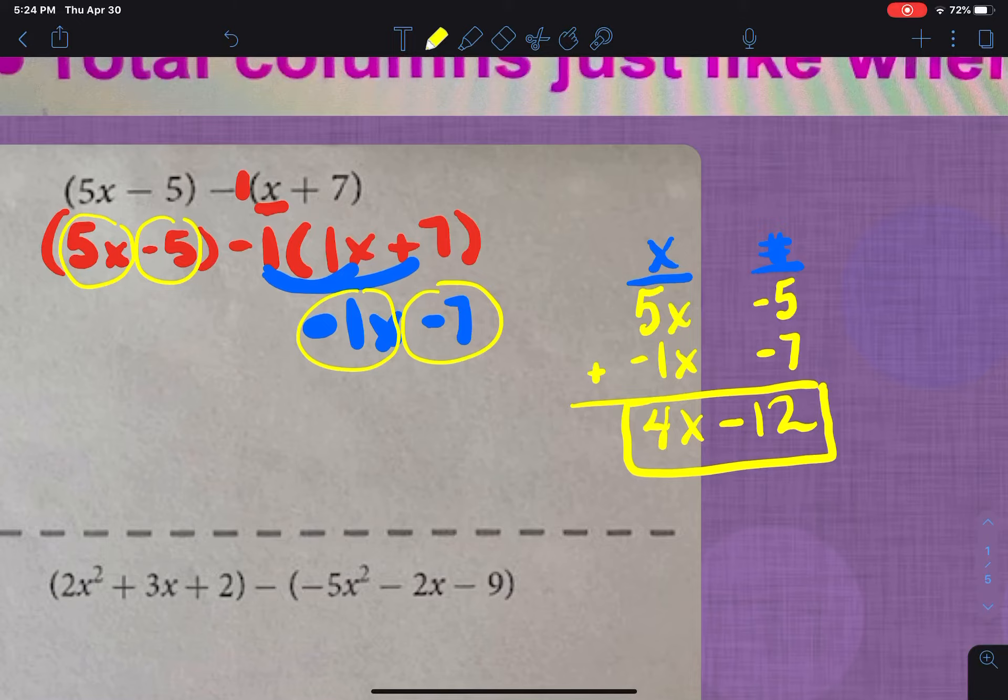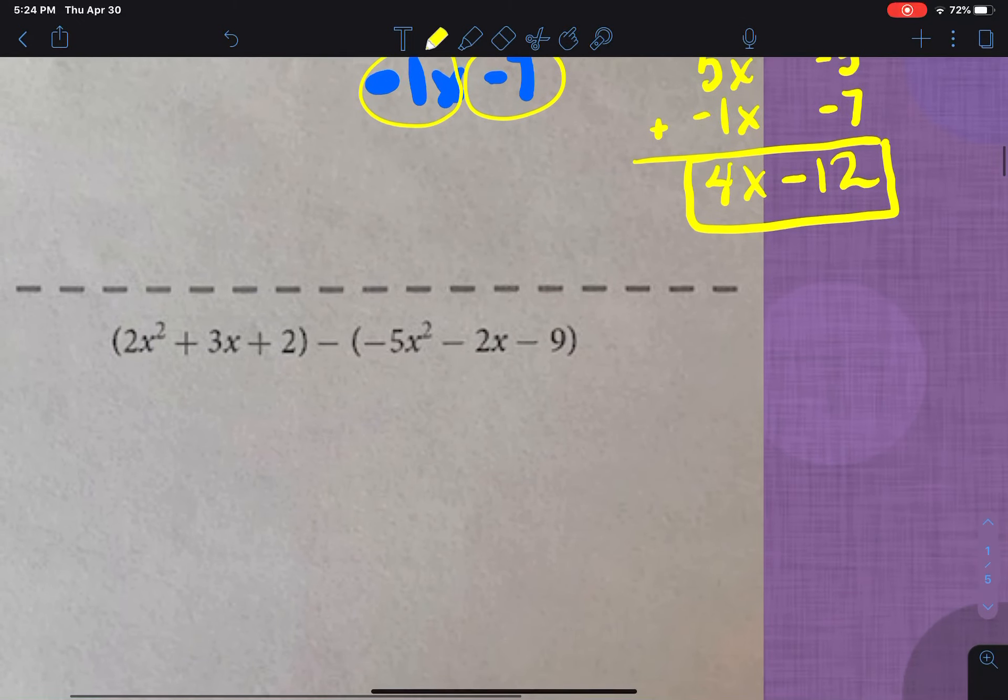Okay, let's try another one. So on this next one, I have to distribute to each one of these. Remember we talked about basically all it does is change the sign. So negative 5x squared becomes positive 5x squared. Minus 2x becomes adding 2x. Minus 9 becomes plus 9. Okay, once it's distributed,